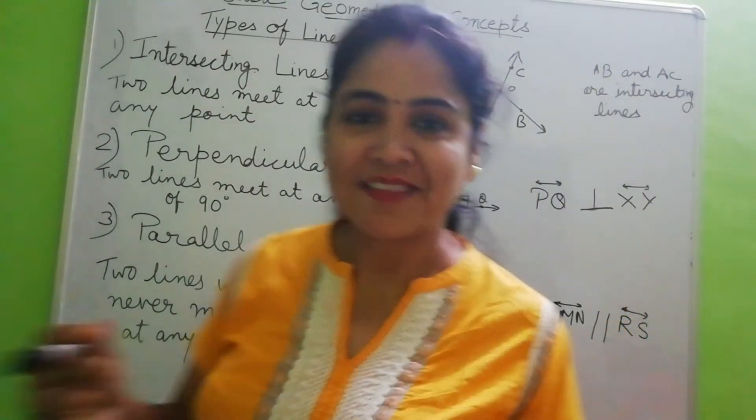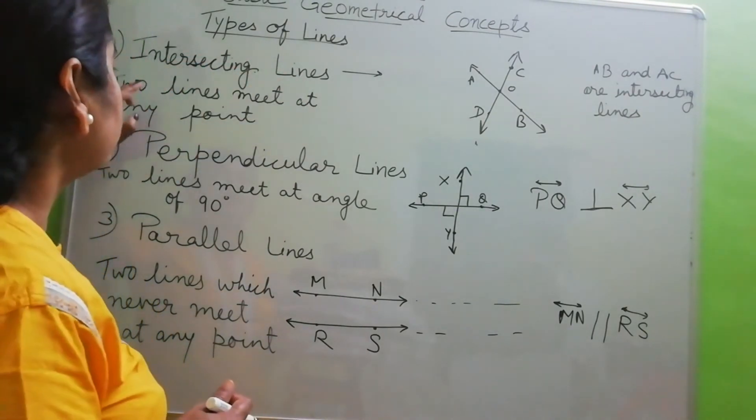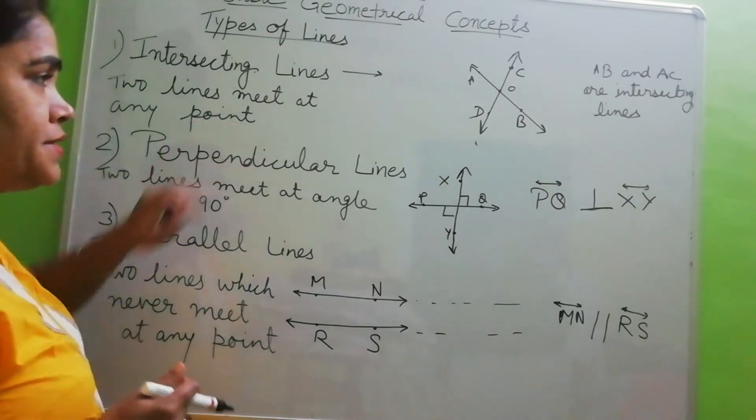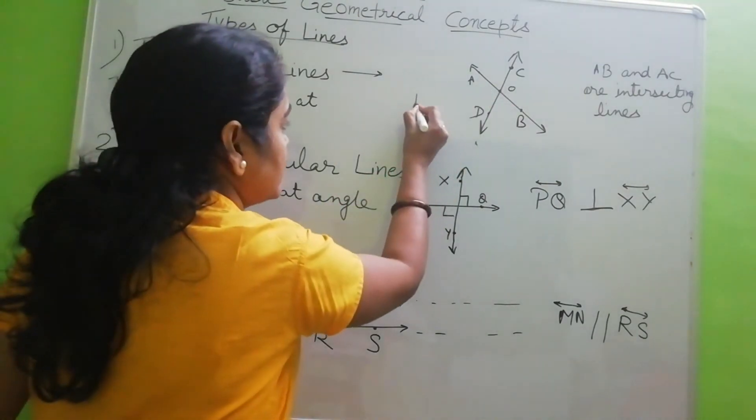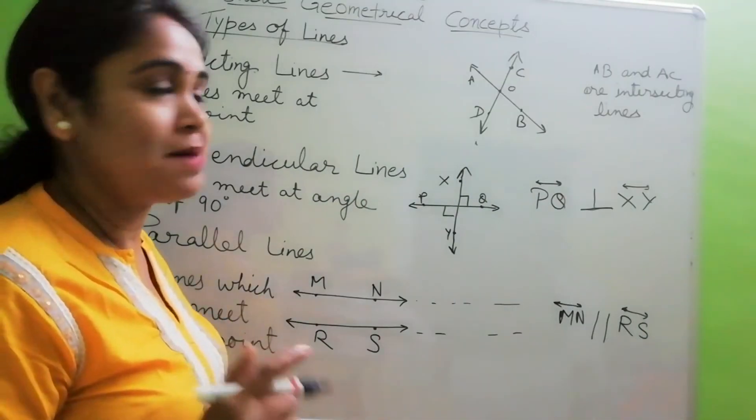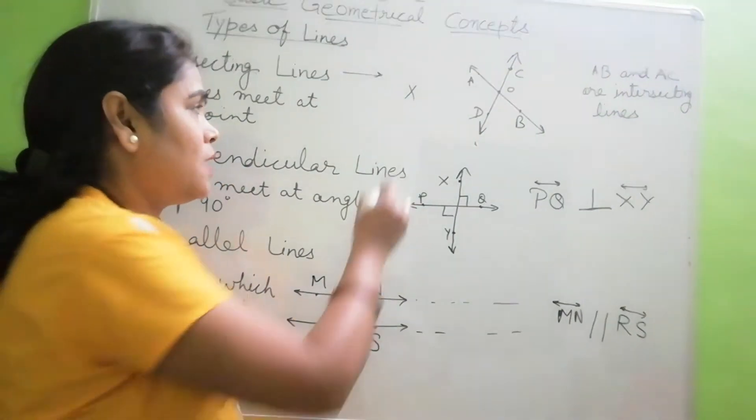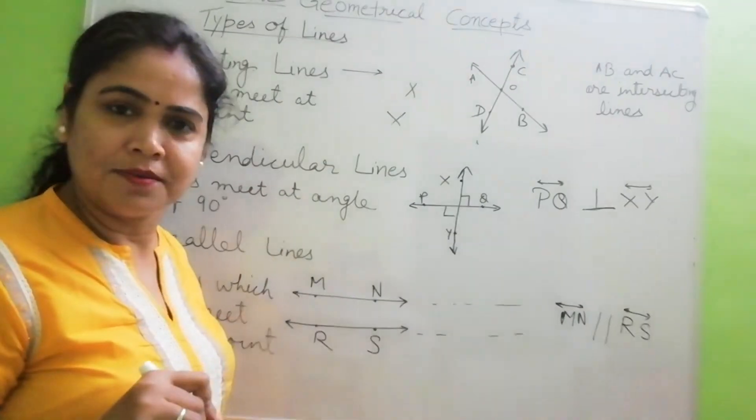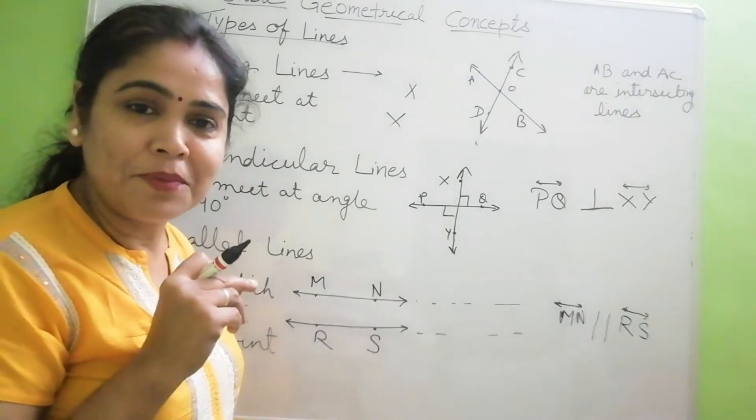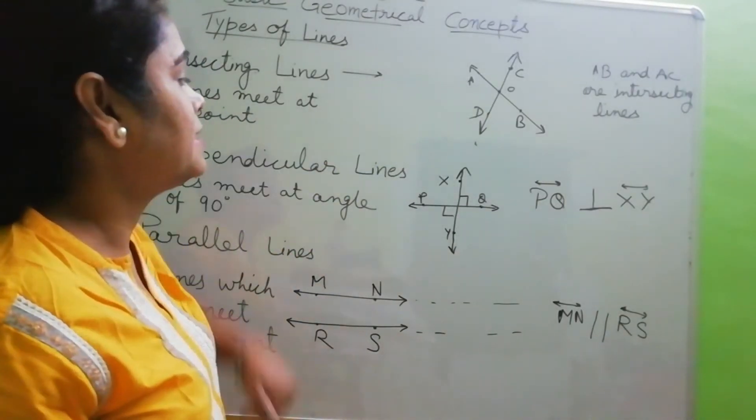So we can say now that intersecting lines are the lines which meet at any point. Any point. Not necessarily that at 90 degree they have to meet. I will give you an example. Multiplication sign. When you put cross in your copy, so this is example of intersecting line.